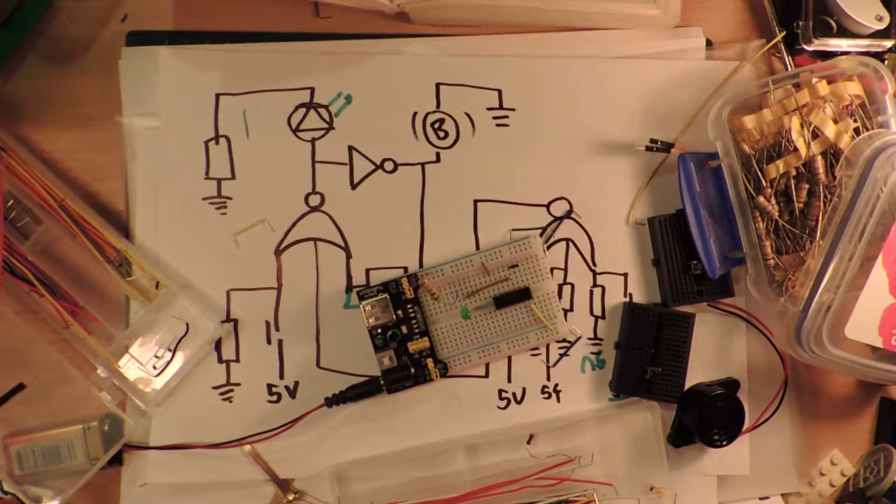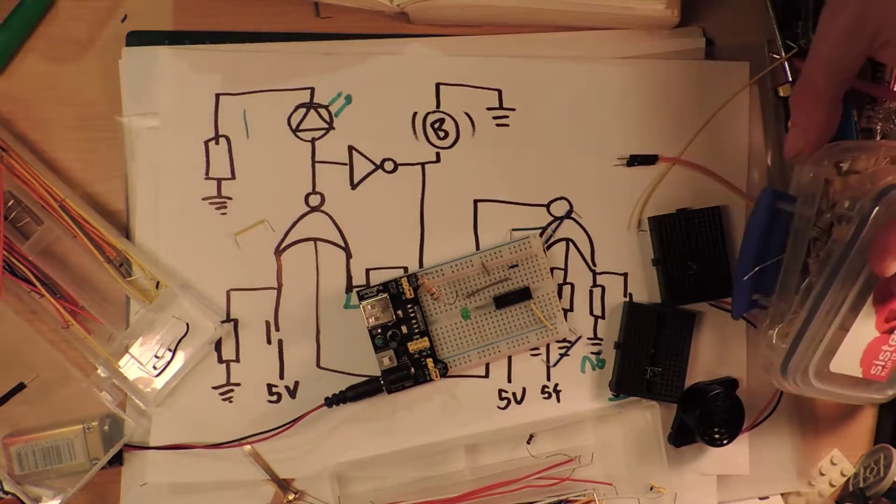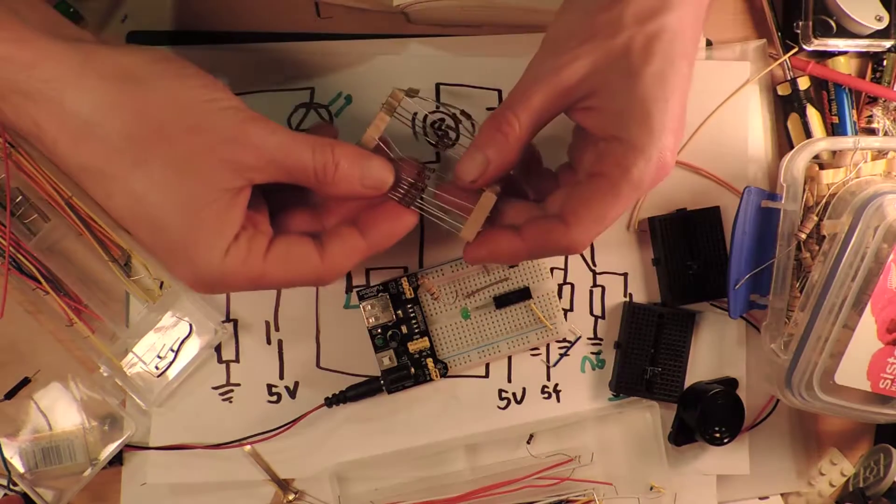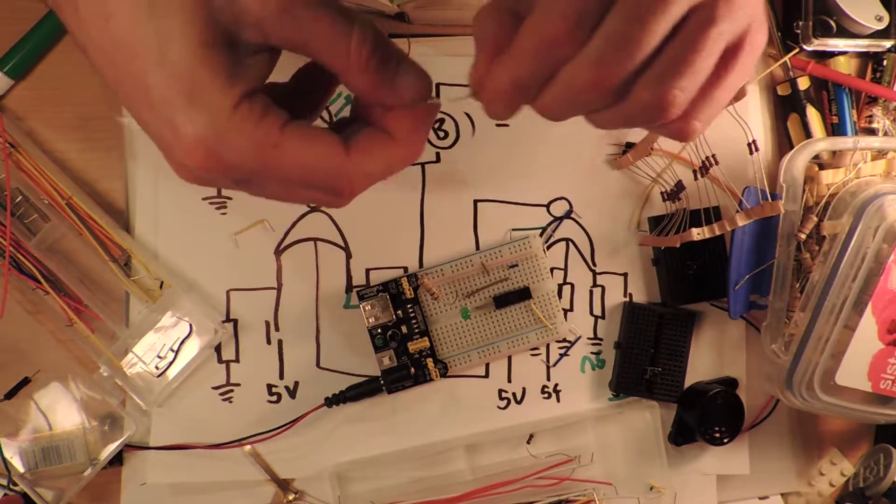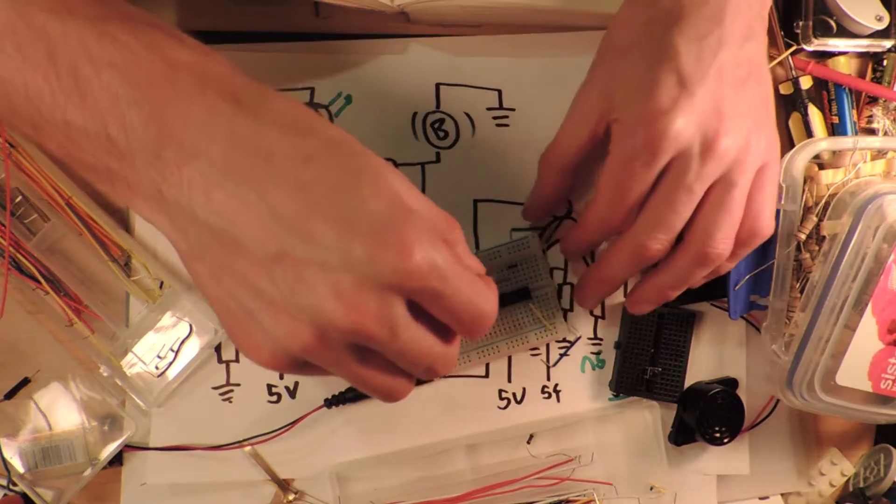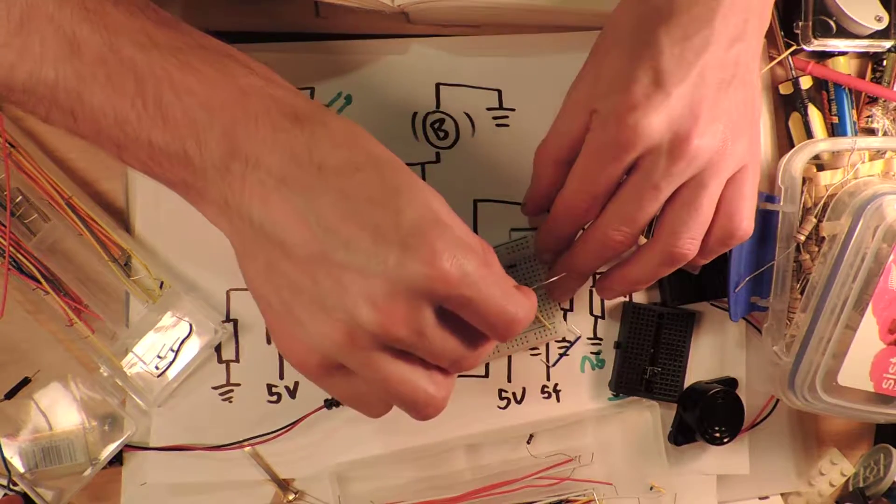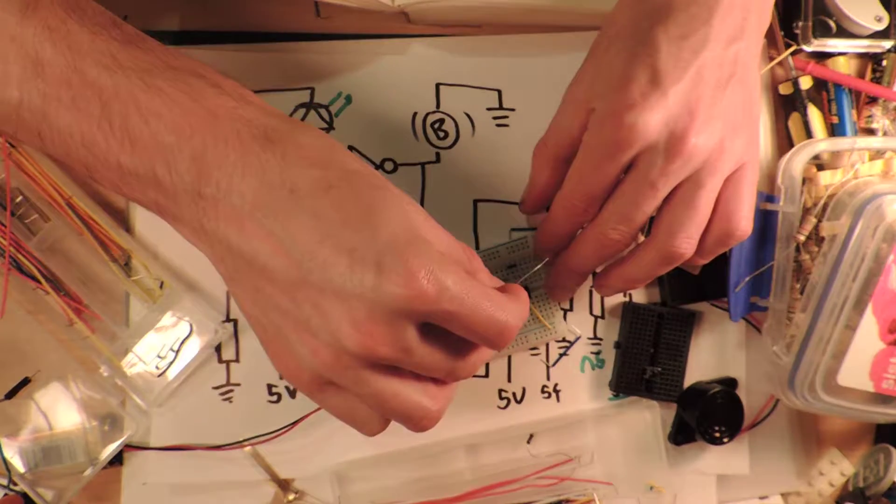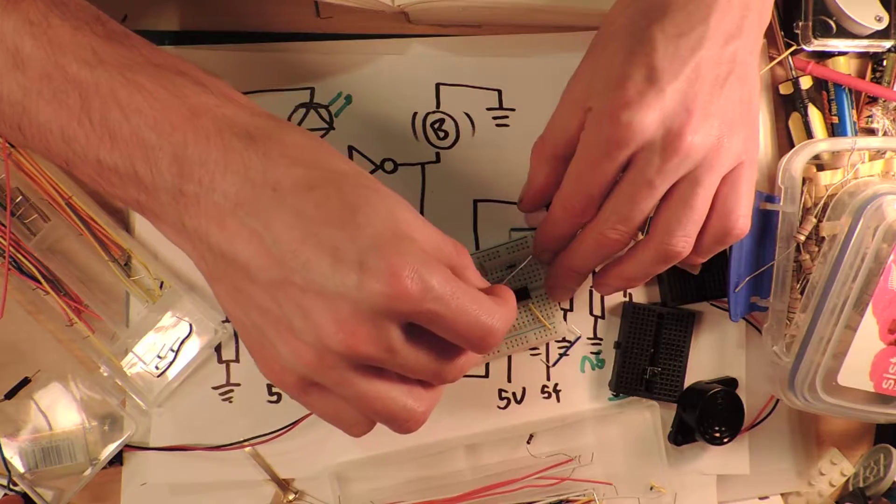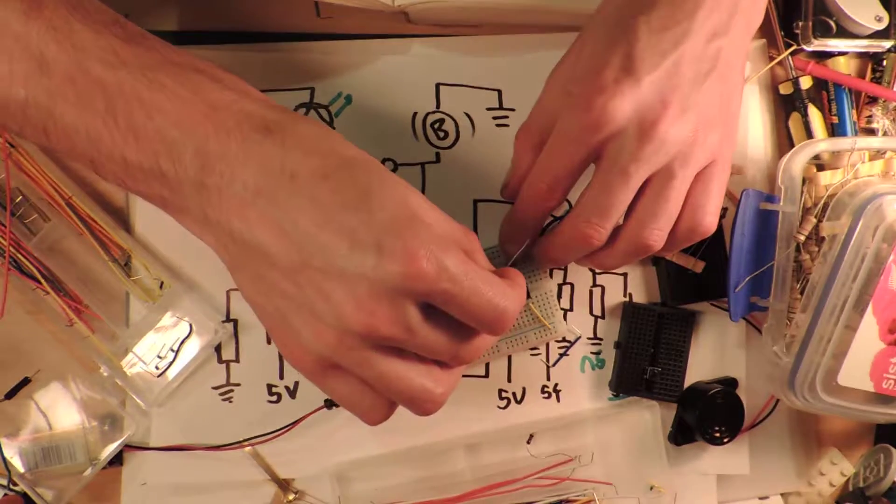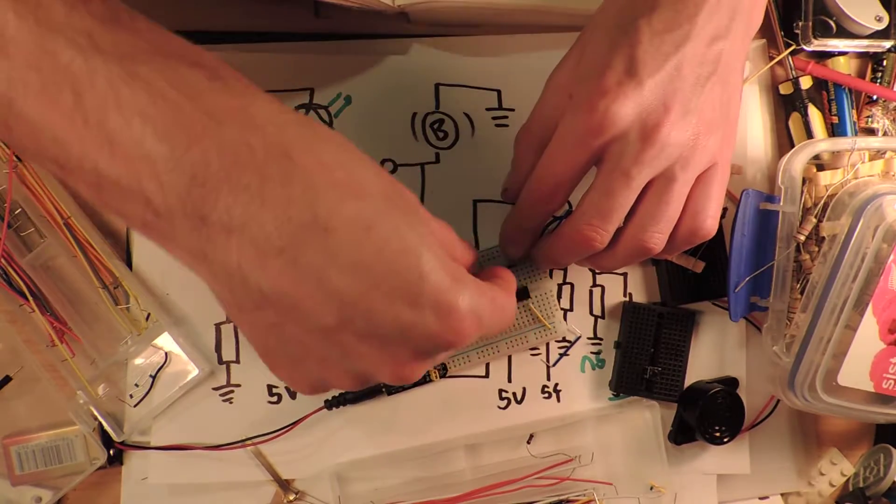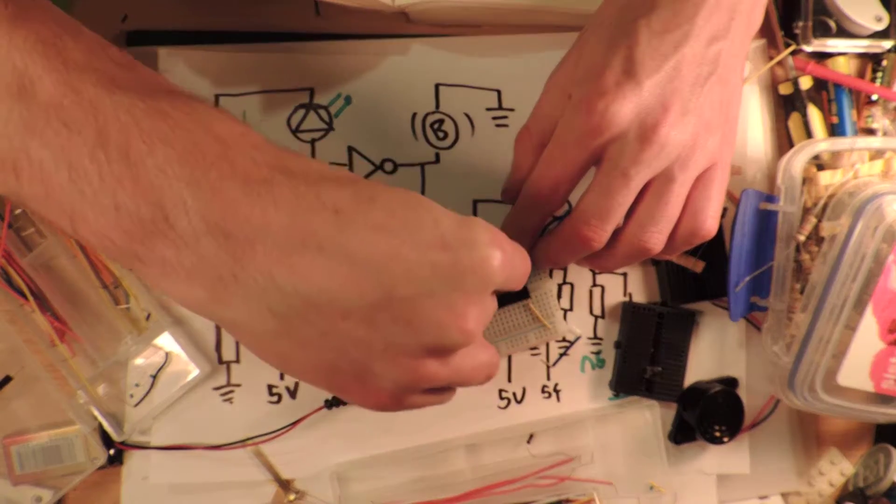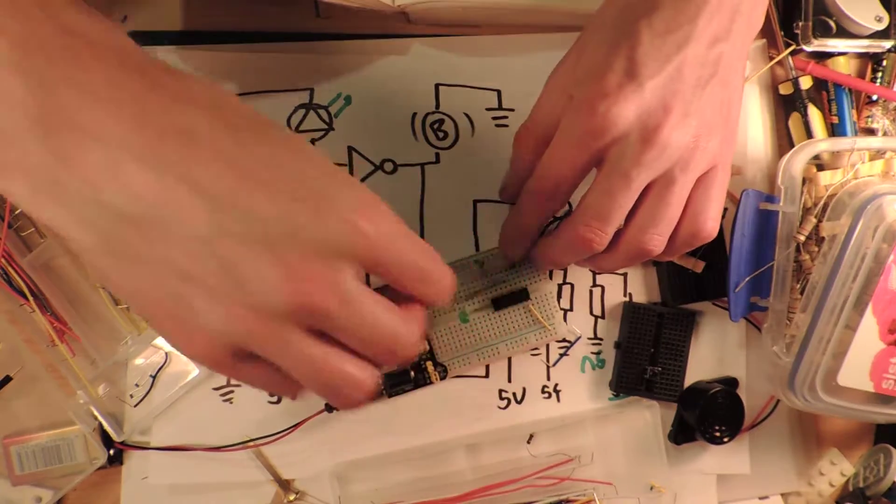So where are my 33Ks, my little pretty orange ones? Here they are. I need one of the inputs for this, this is where it gets nice and easy. I'm going to put my pull down, so that input is going to be pulled down to ground like so. That looks quite neat, doesn't it?